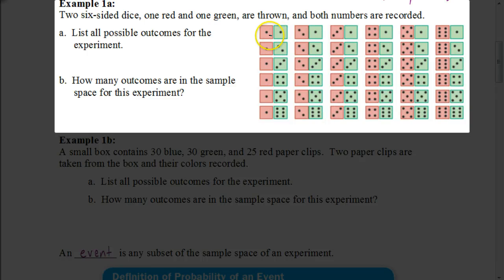I've put a diagram that lists all the possible scenarios. We could get a 1 and a 1 — a 1 on the red and a 1 on the green. We could get a 1 red and a 2 on the green, a 1 on the red and a 3 on the green, and so on. Counting them all up, we have 6 rows of 6 columns, so 6 times 6 equals 36. There are a total of 36 possible outcomes.